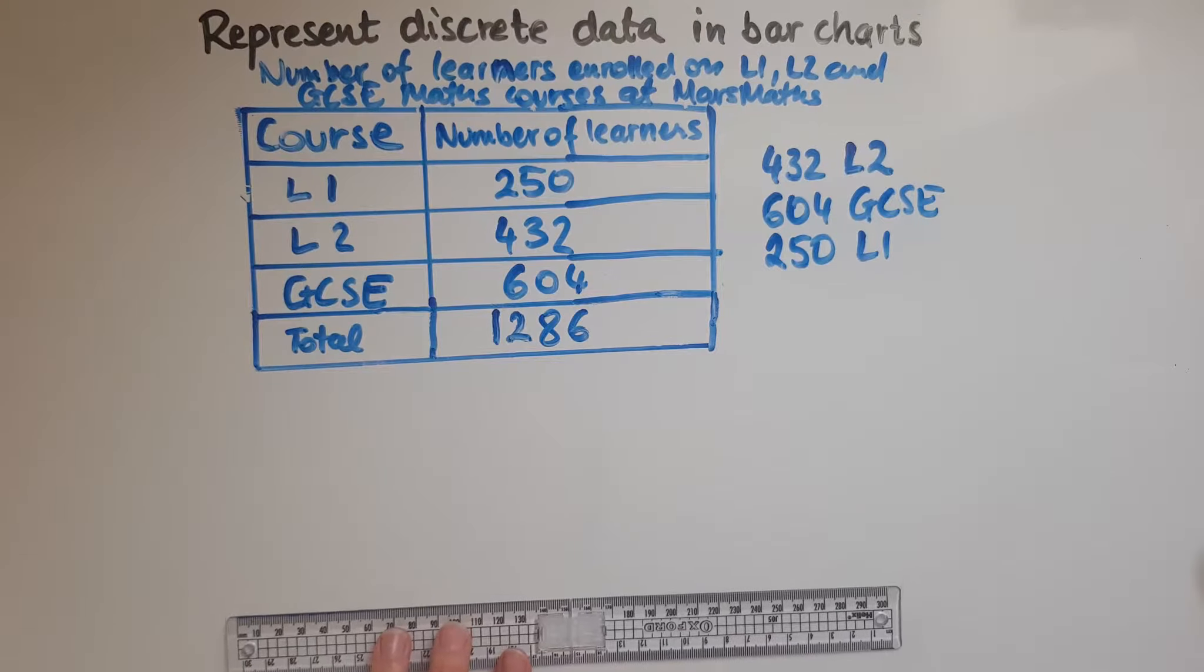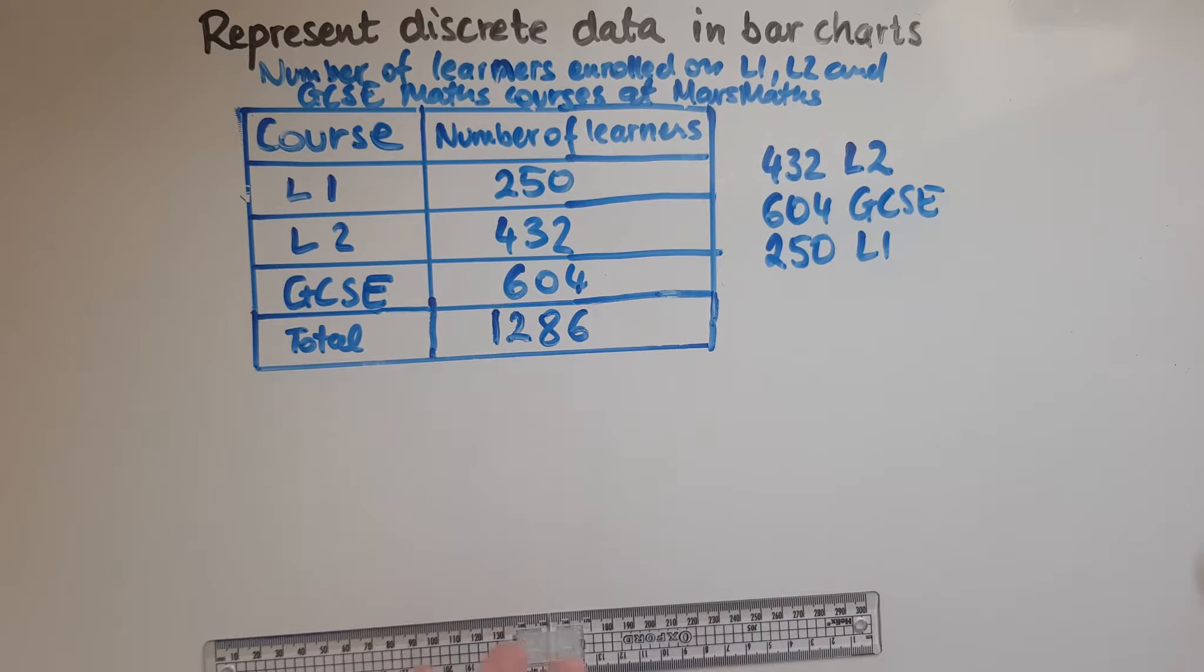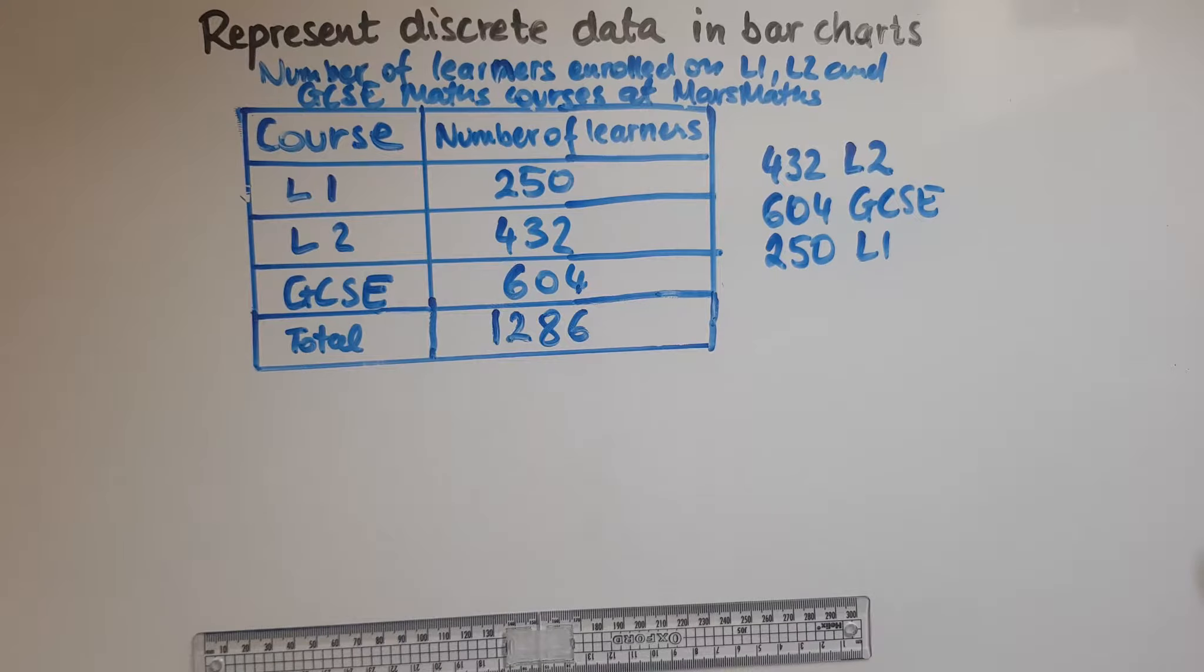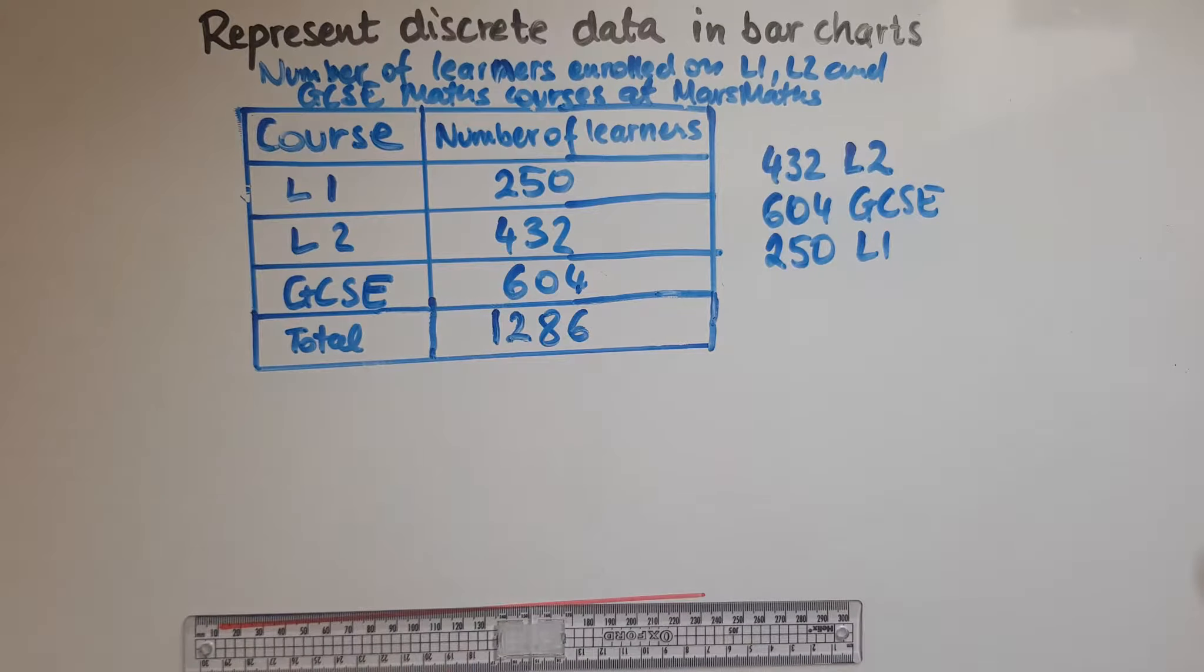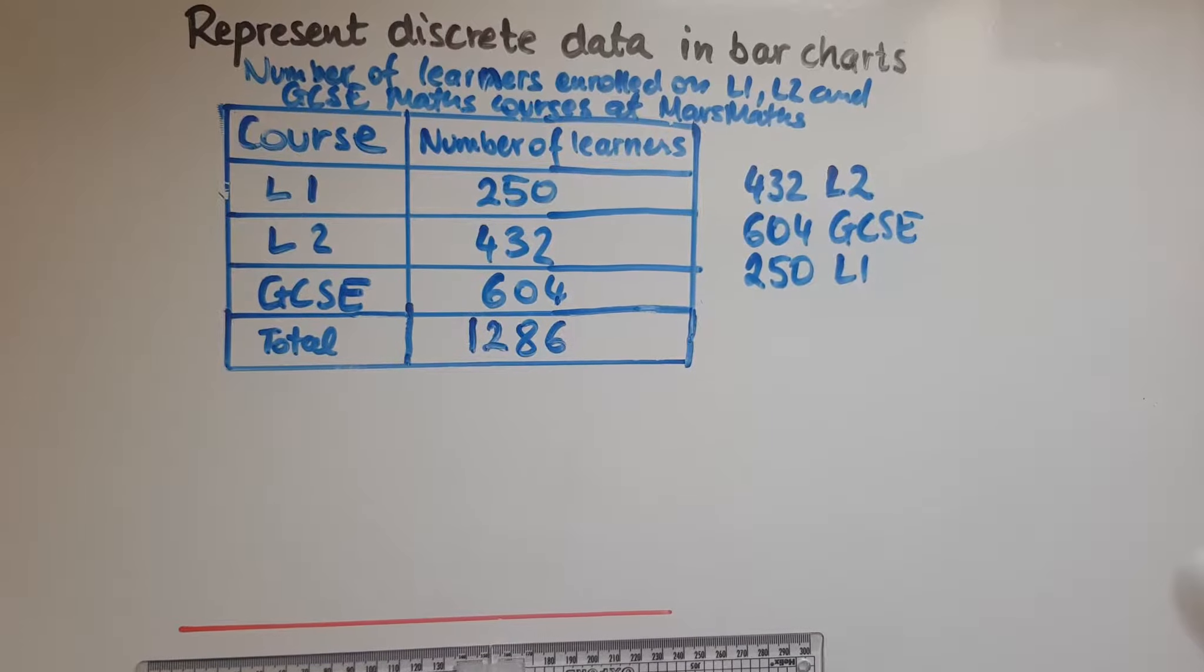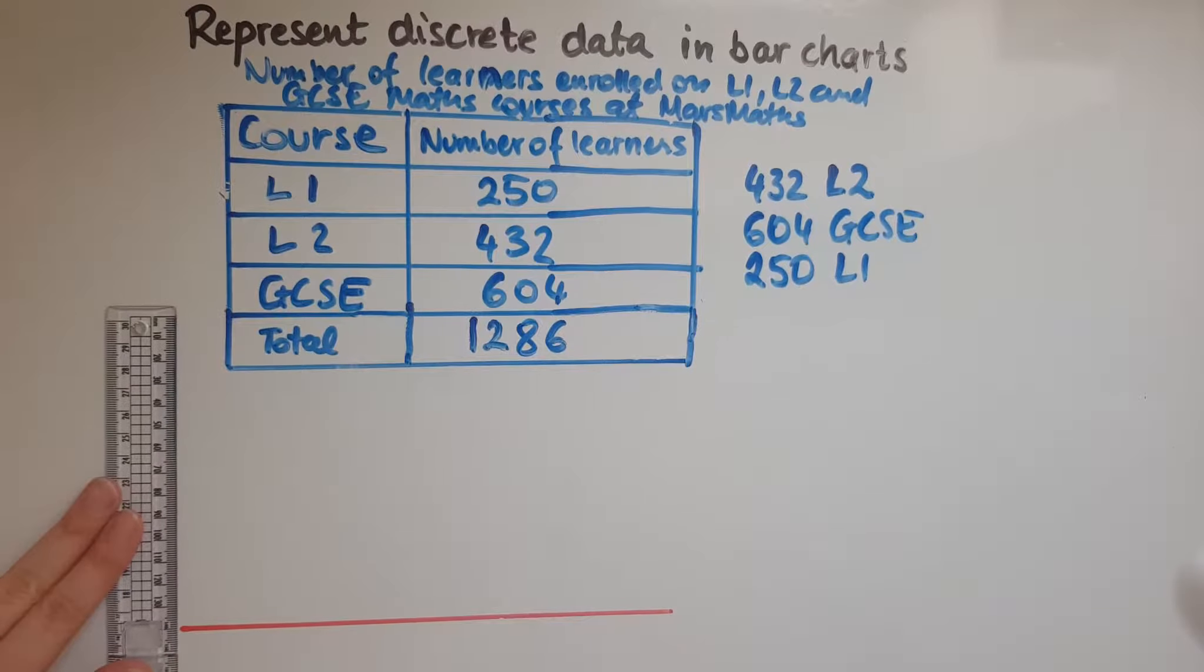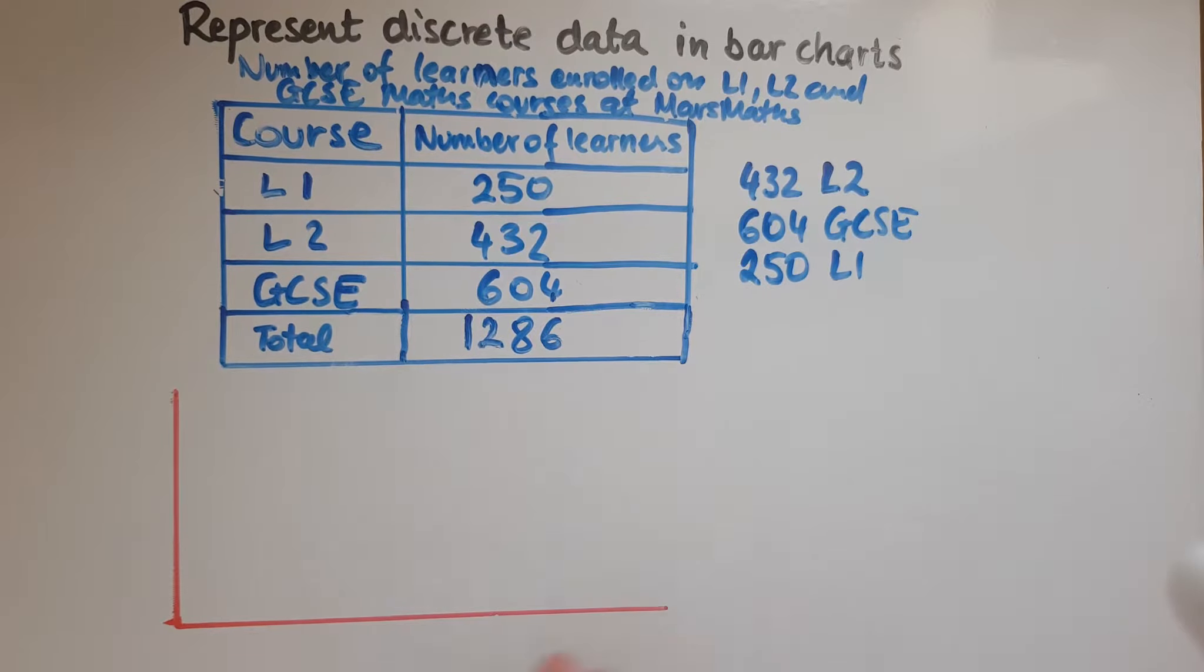So I'll start off by drawing what we call the horizontal axis, horizontal like the horizon. So there we have the horizontal axis. I'll try and move the camera a bit so that it looks exactly horizontal or closely, and then we have the vertical axis. Here on the horizontal axis we'll show the different types, the different courses, whereas on the vertical axis we typically show the numbers.